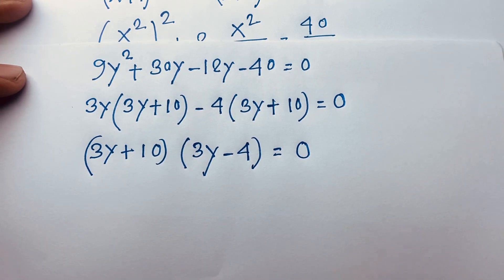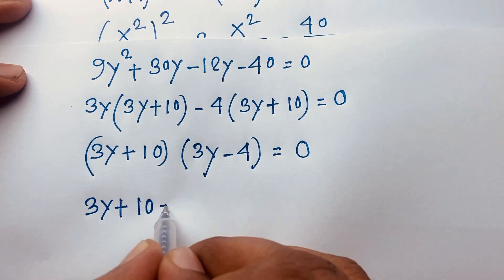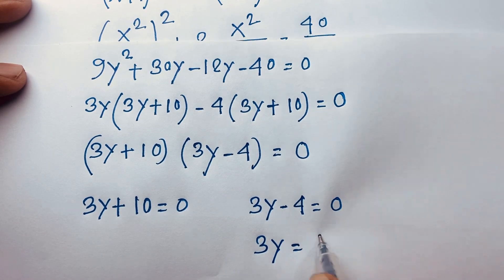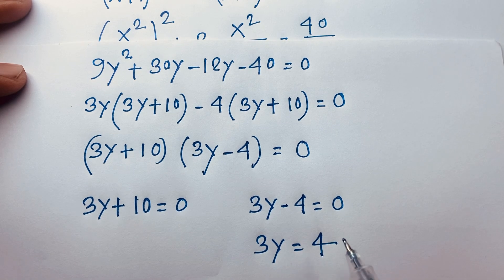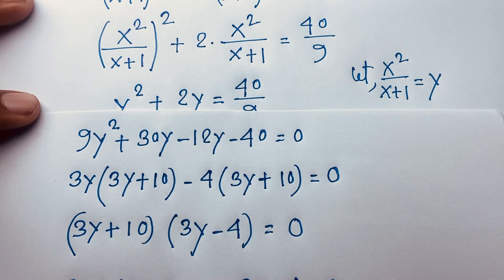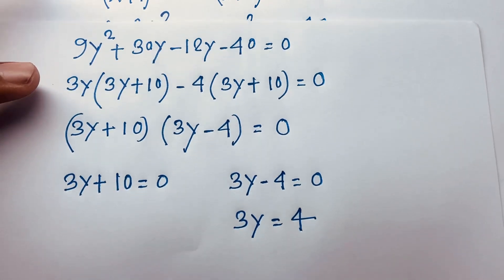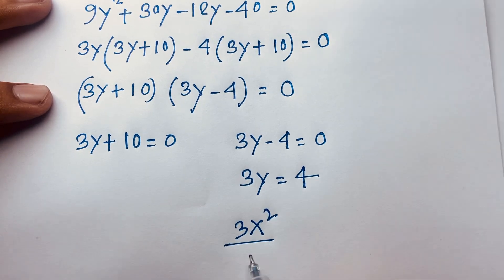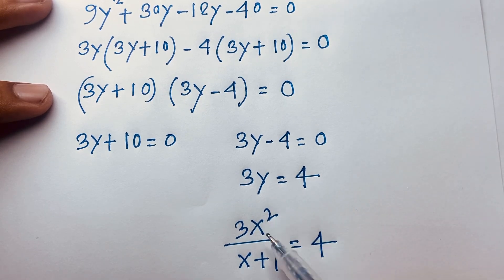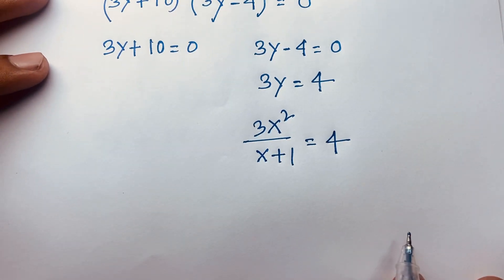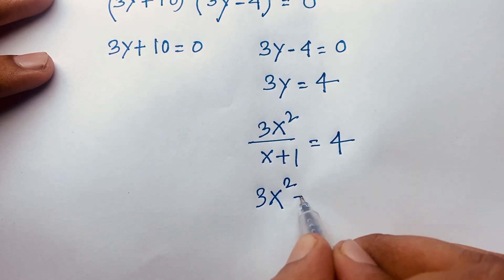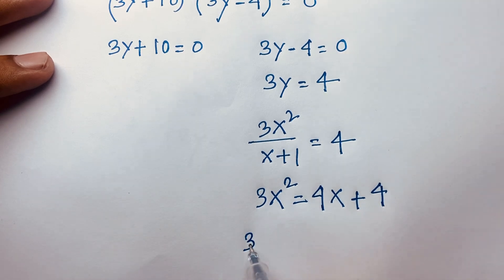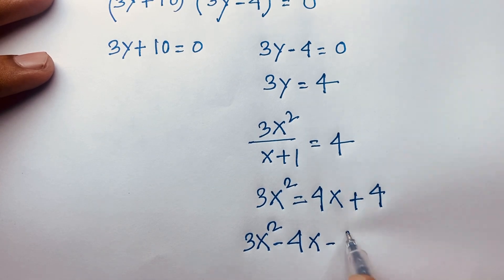We find two cases. First case: 3y + 10 = 0, second case: 3y − 4 = 0, giving 3y = 4. Recall that y = x²/(x+1), so substituting: 3x²/(x+1) = 4. This gives 3x² = 4x + 4, and moving terms: 3x² − 4x − 4 = 0.